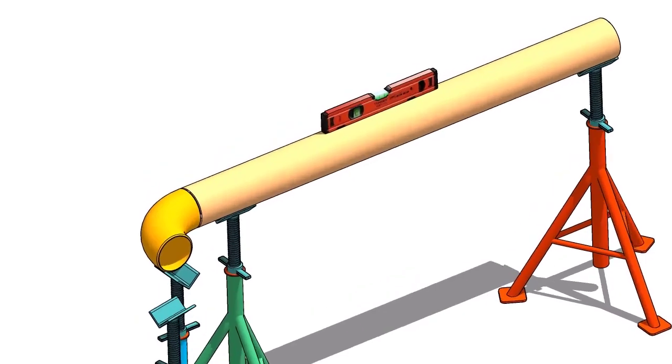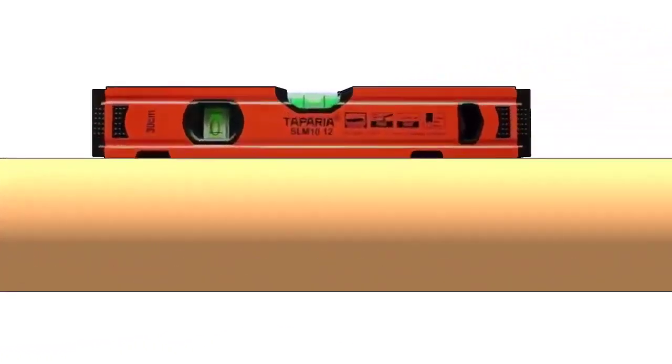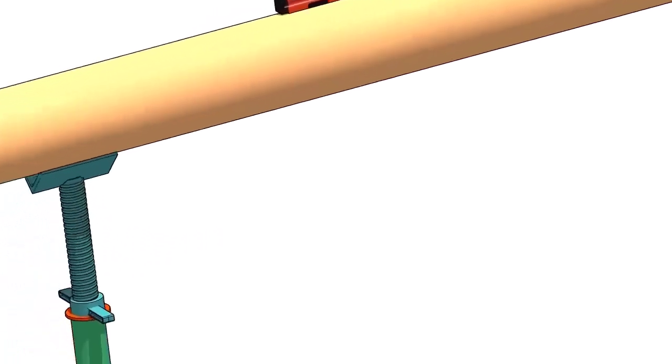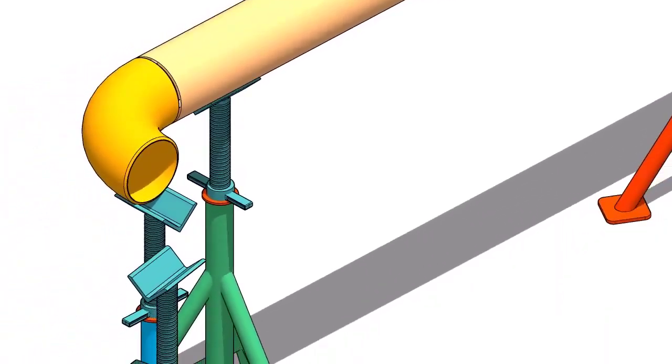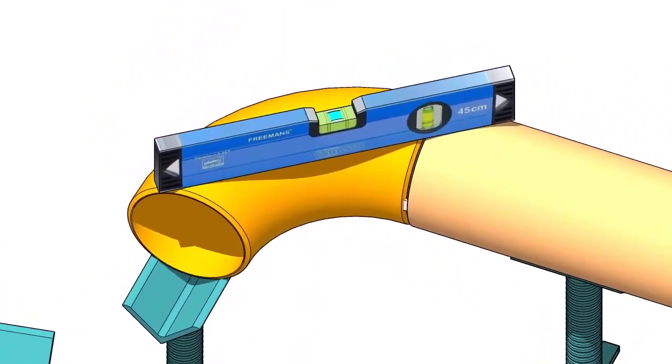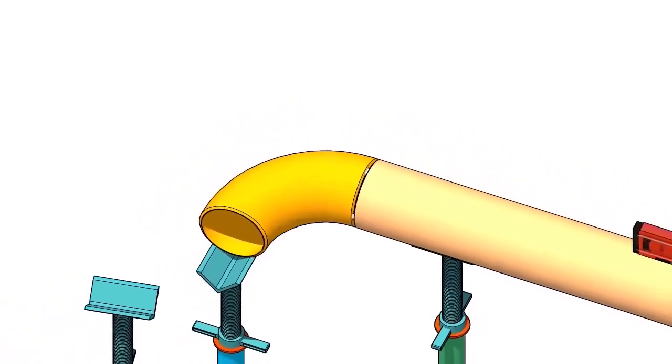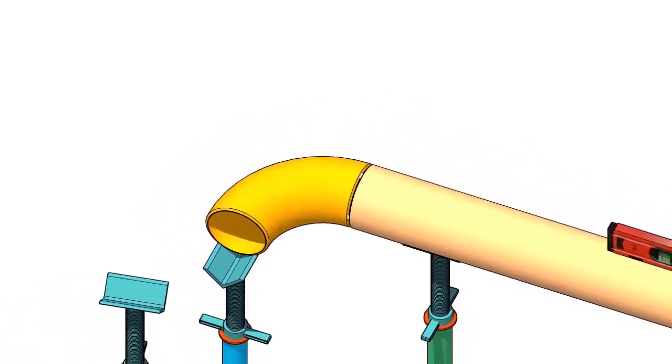Check the level of the spool as shown. Put the elbow on the stand and check the level, use a straightedge and a spirit level.